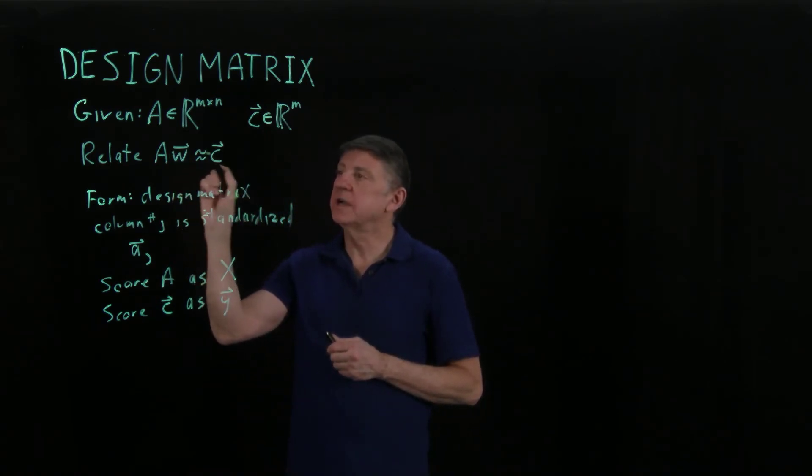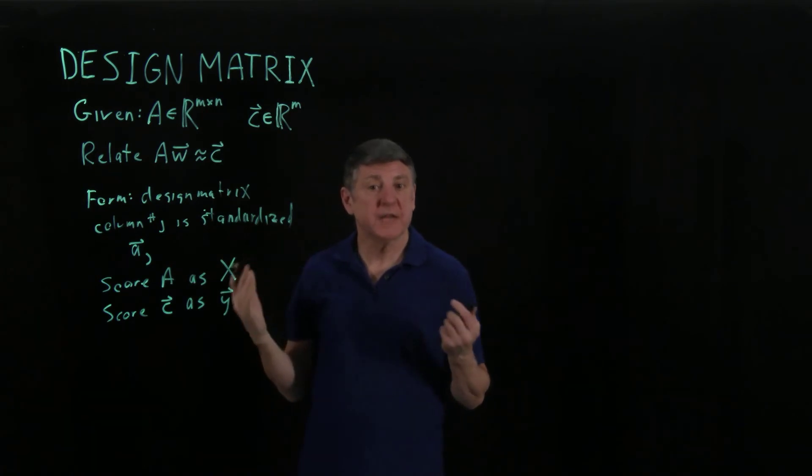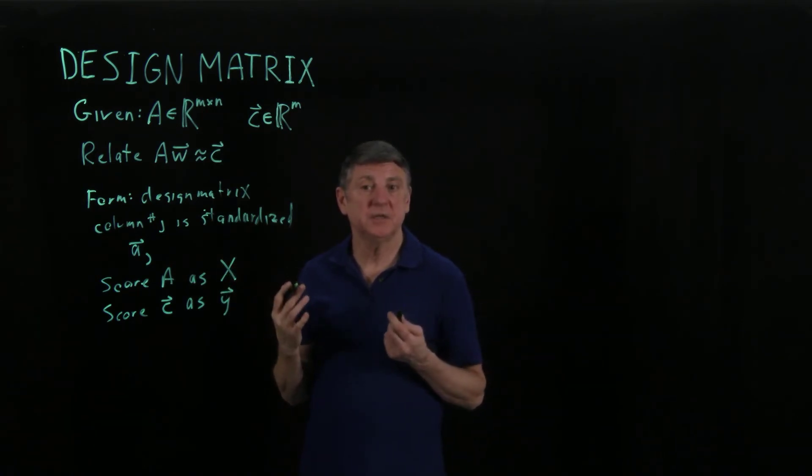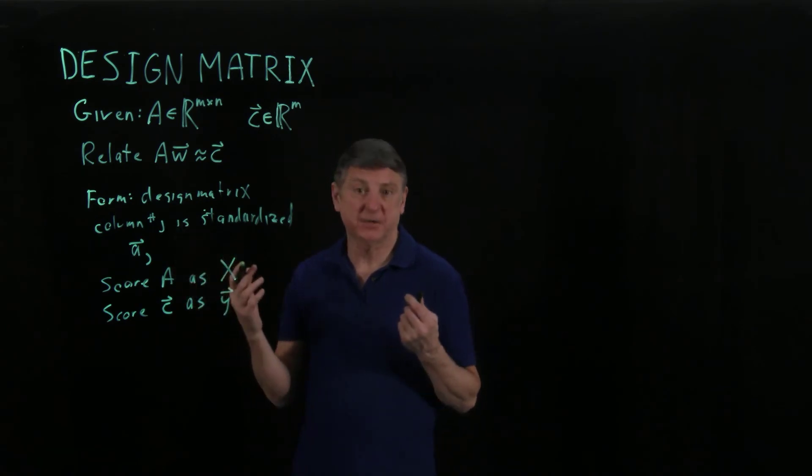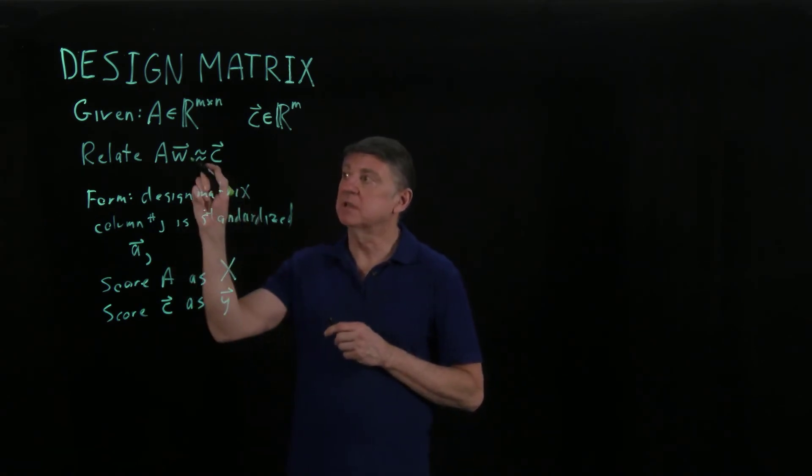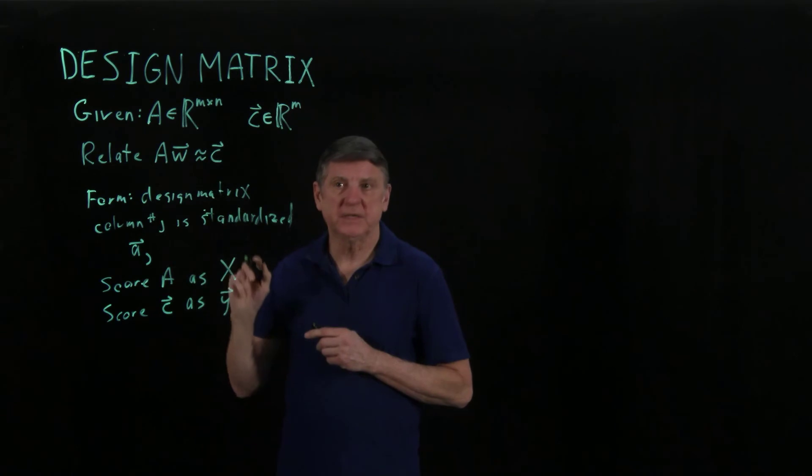When we've scored both sides, we've taken away the mean and made these both unit variance matrices and vectors. That means the weights won't be the same.